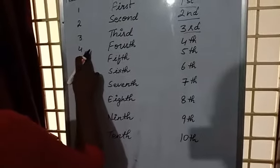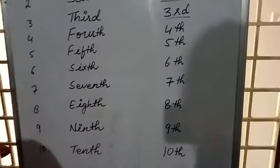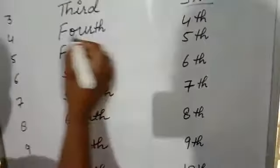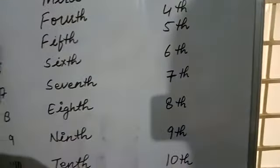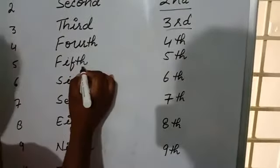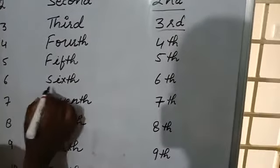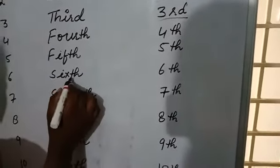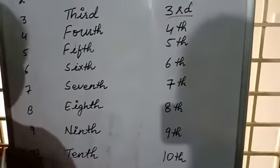And from number 4 onwards, we will add the TH along with the numbers. Okay? Number 4, fourth. Then number 6, S-I-X-T-H sixth. 6th, TH sixth.